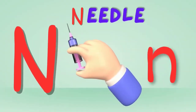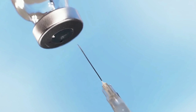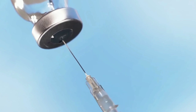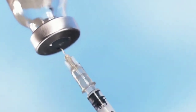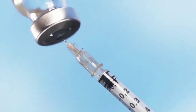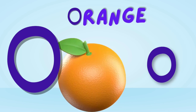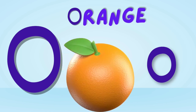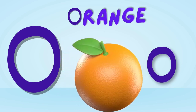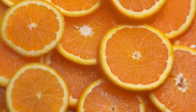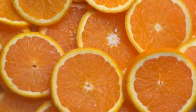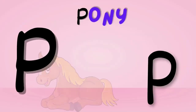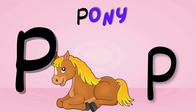N is for needle. Needle, needle — this is the needle. O is for orange. Orange, orange — this is an orange.